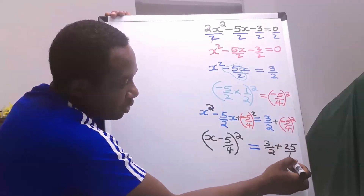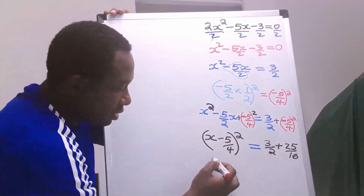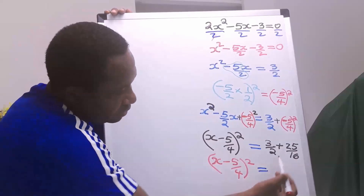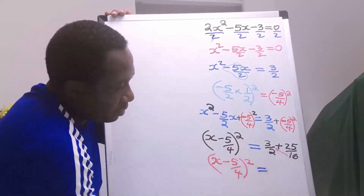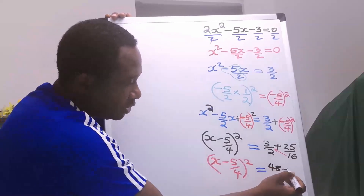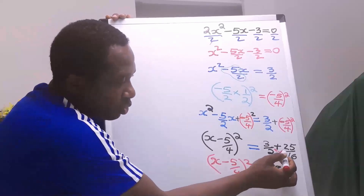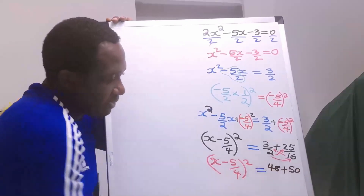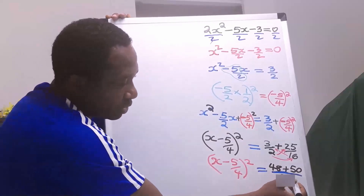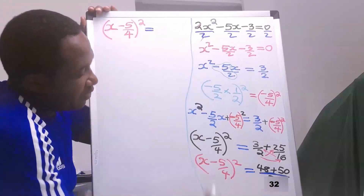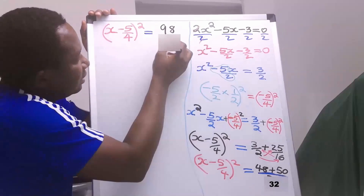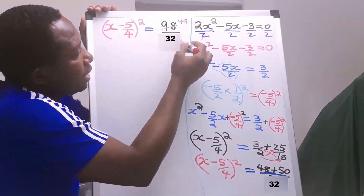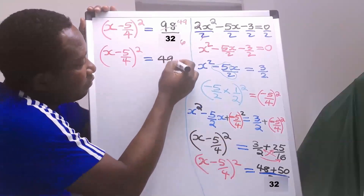On the right-hand side we have 3 over 2 plus (minus 5 over 4) squared, which is 25 over 16. To add these fractions: 16 times 3 gives 48, and 2 times 25 gives 50. The denominator is 2 times 16 equals 32. So 48 plus 50 is 98 over 32, which simplifies to 49 over 16.